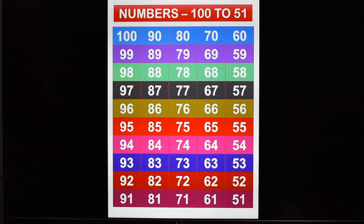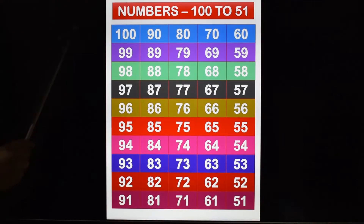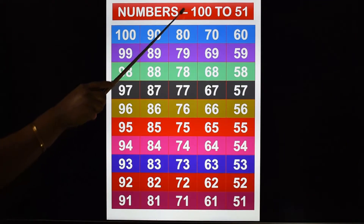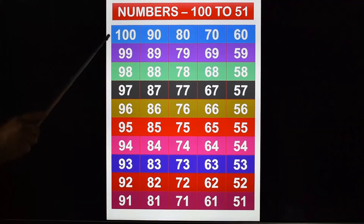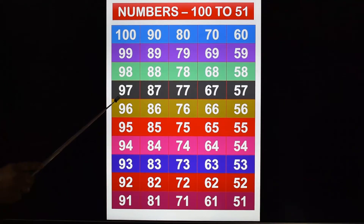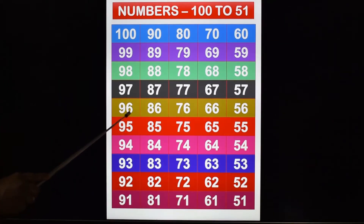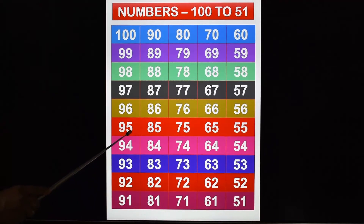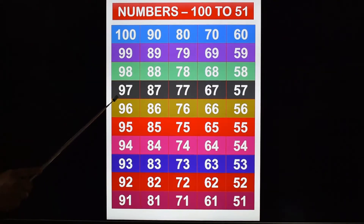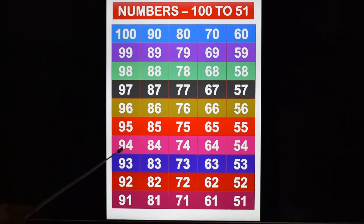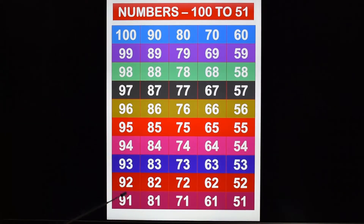We are going to see the numbers backward, that is in reverse. N-U-M-B-E-R-S, numbers 100 to 51. We are going to learn the numbers backward. 1-0-0: 100, 9-9: 99, 9-8: 98, 9-7: 97, 9-6: 96, 9-5: 95, 9-4: 94, 9-3: 93, 9-2: 92, 9-1: 91.